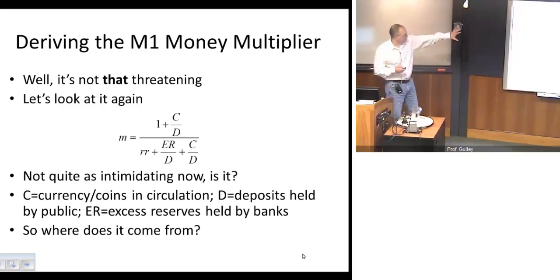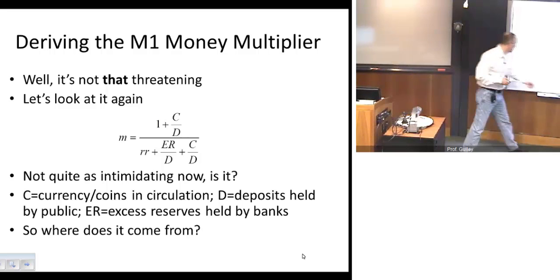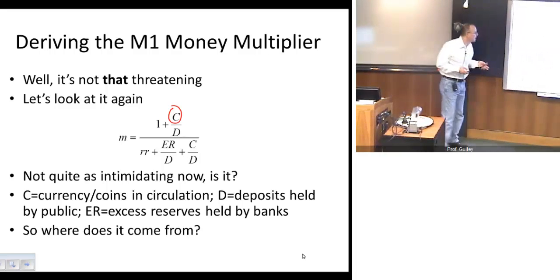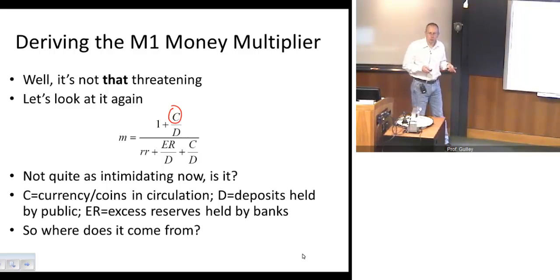Here's what we want to see. We want to see what pieces and parts are in the equation here. So the little m, that's going to stand for our money multiplier. C is just going to be the volume of currency and coins that are in circulation, so C is the coins and currency that we decide to hold. D is the volume of demand deposits, in other words the volume of our checking accounts.